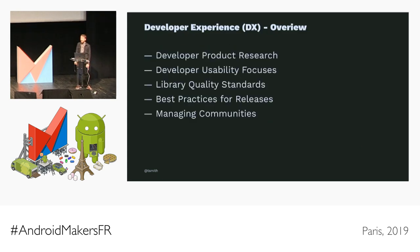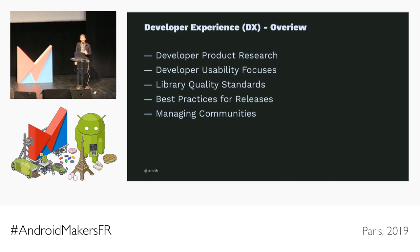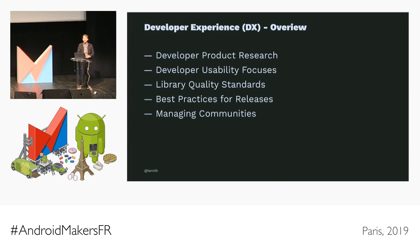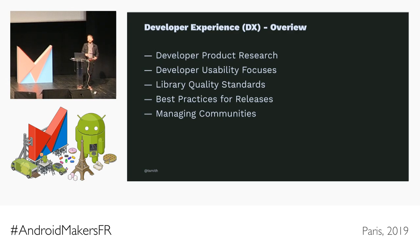I'll be covering a few large categories that should give you some insight into how to think about this space. First, we'll discuss how to think about the product concerns for developers. Then we'll talk about what usability means for libraries, SDKs, and other tools. Then we'll move on to more important quality standards that will impact your customers' customers or the end user. Then we'll cover some tips for guiding you through the release process. And finally, some ways to think about engaging with and supporting your community of developers.